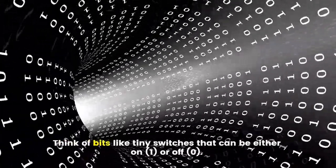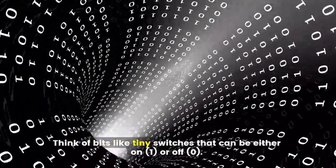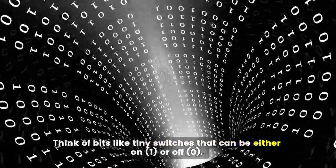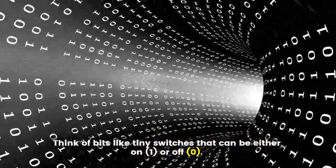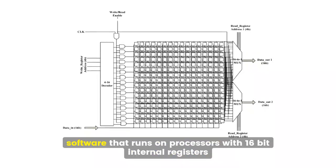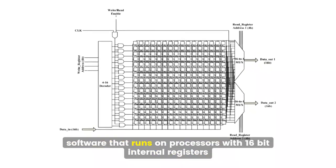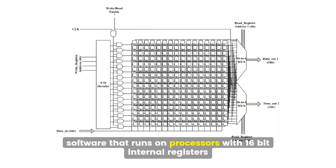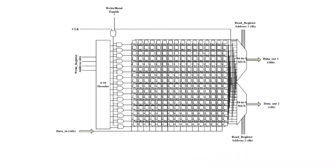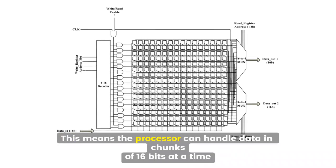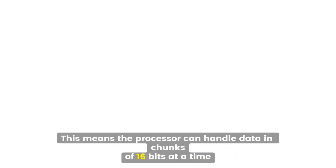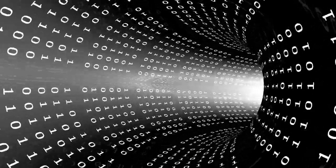Think of bits like tiny switches that can be either on (one) or off (zero). A 16-bit program is software that runs on processors with 16-bit internal registers, meaning the processor can handle data in chunks of 16 bits at a time.